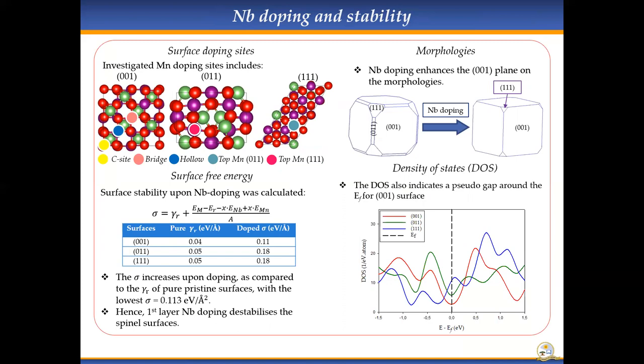We investigated the doping sites of niobium on the major lithium manganese oxide surfaces. For the 011 and 001, we found three sites which were the C-site, the bridging, and the hollow. For the 011 and 111 surfaces we only found one manganese top atom which we could dope on.